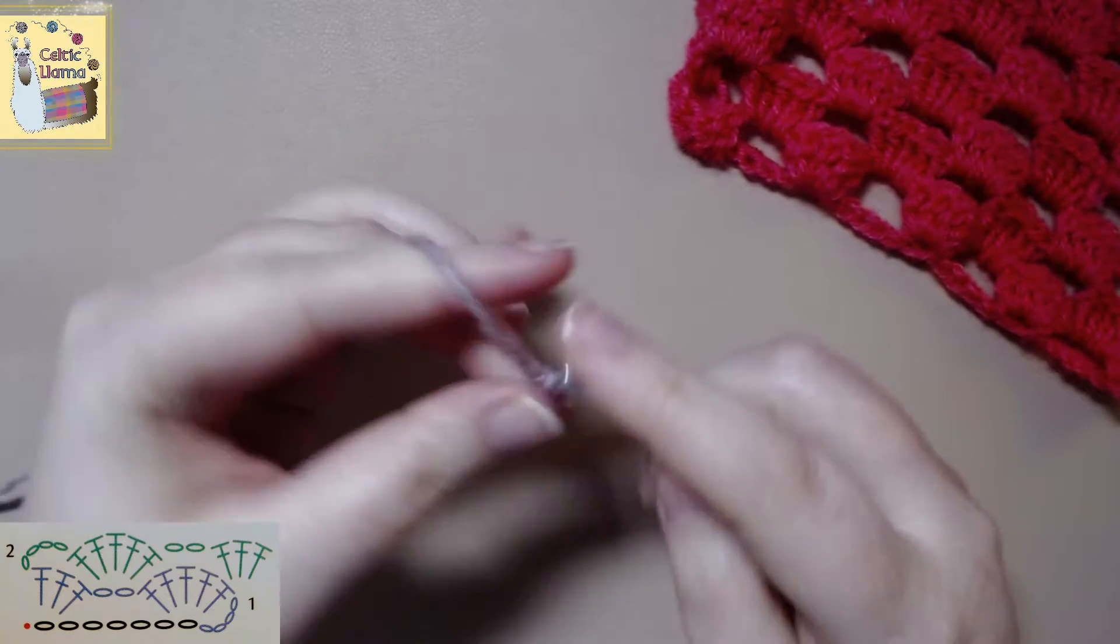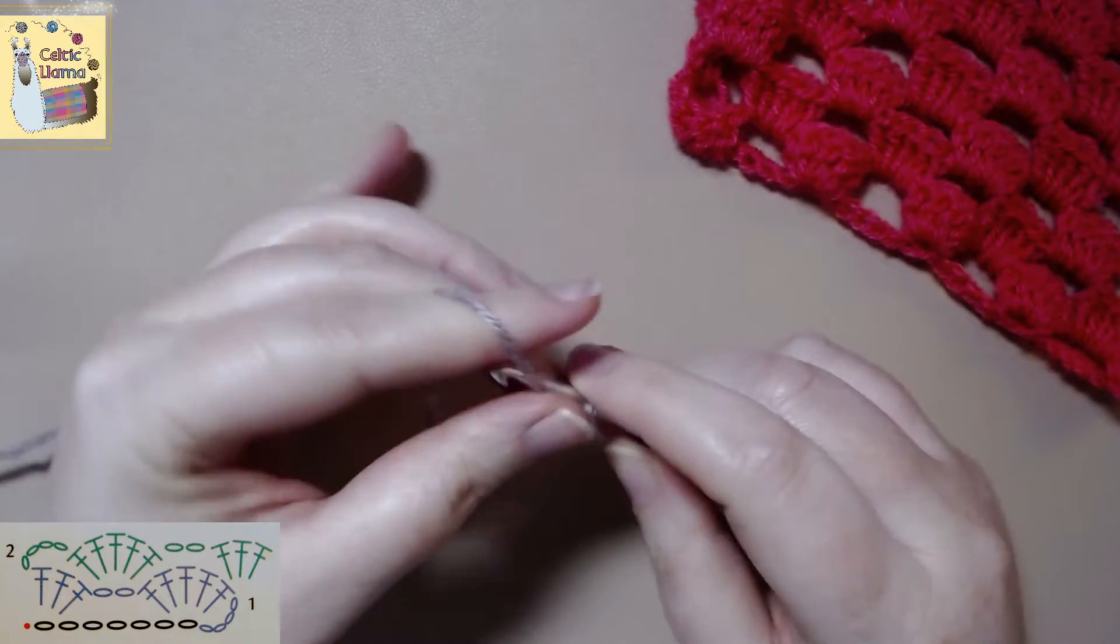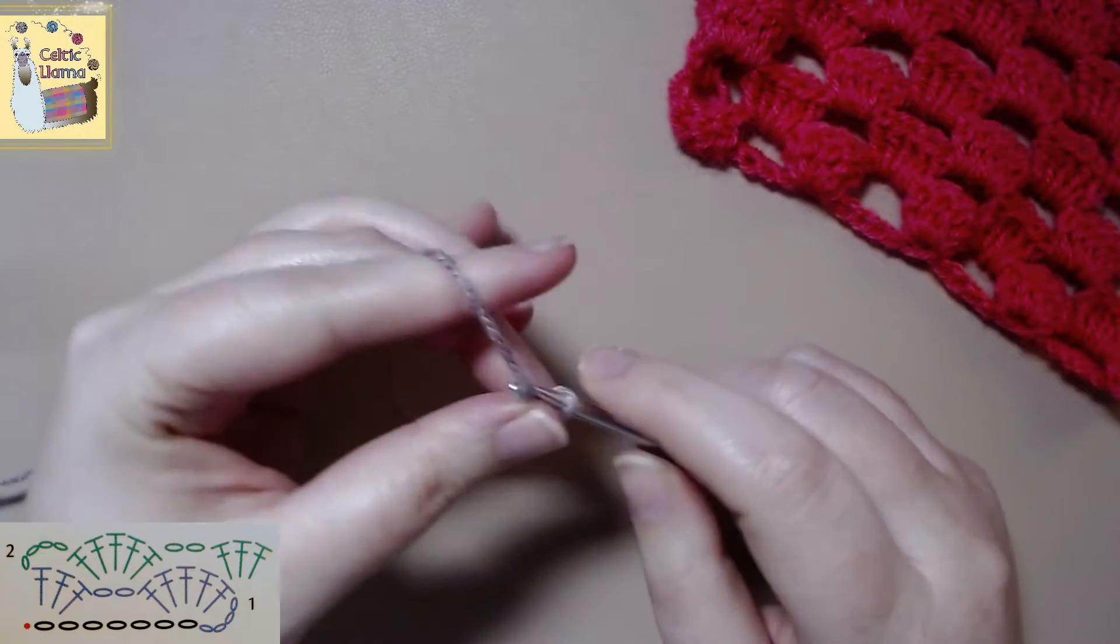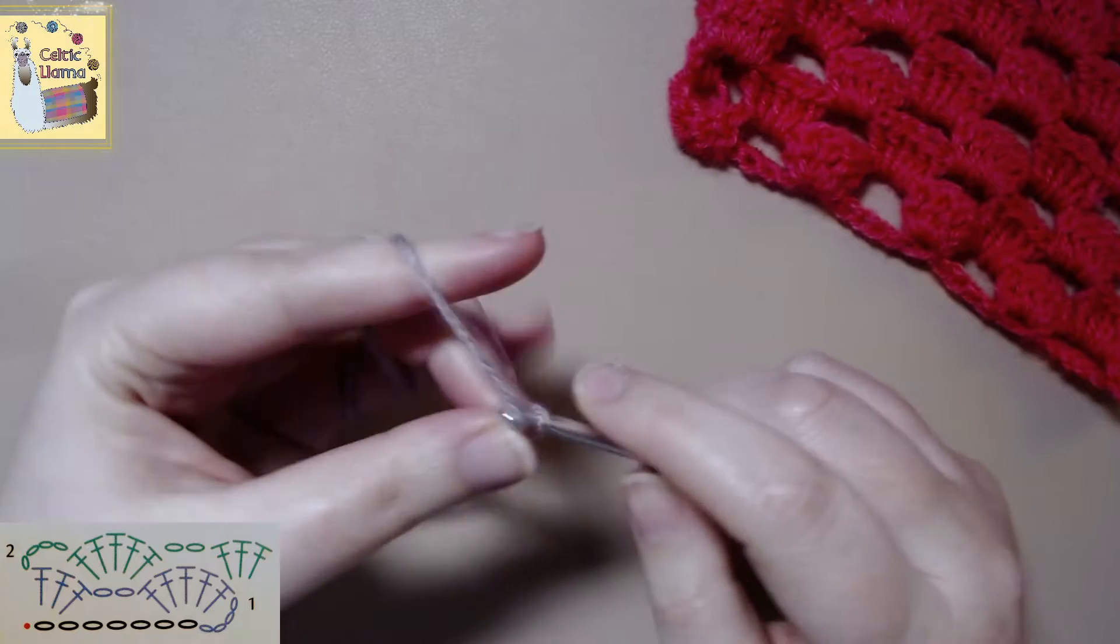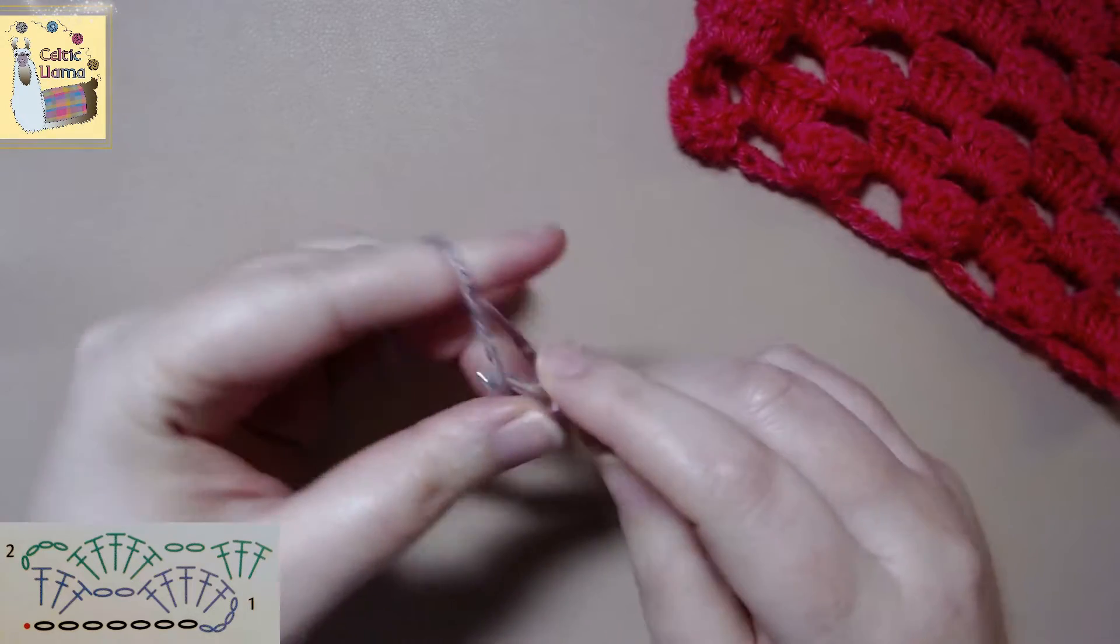To get started you want to crochet multiples of six plus one. For this tutorial I'm going to do a quick 18 chains plus one for a total of 19.